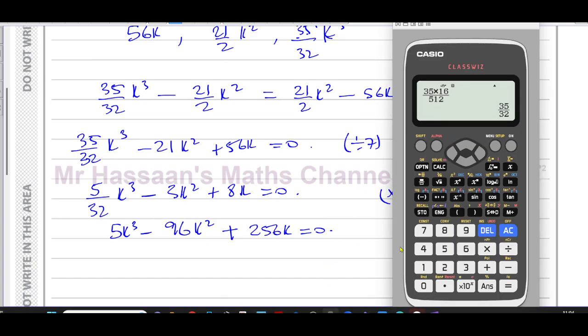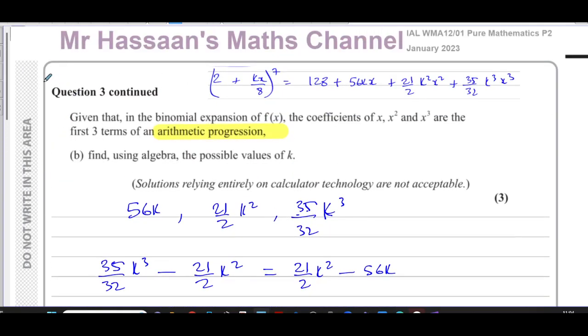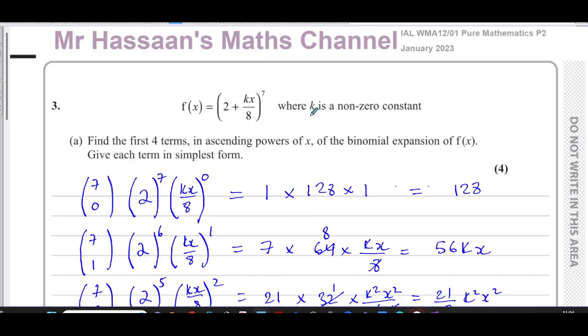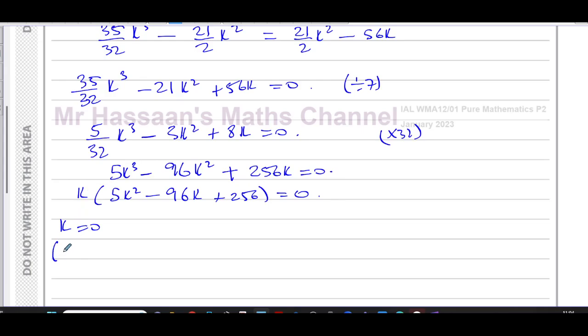So now we can take k as a common factor. We have k times 5k squared minus 96k plus 256 equals zero. So we can say either k equals zero, but I think it can't equal zero because we go back to the original question. It says k is a non-zero constant. So I can't call k zero. So I can say that this is not a solution. k cannot be zero because it is non-zero. The question tells us.